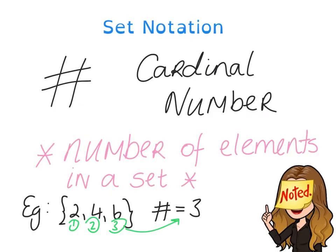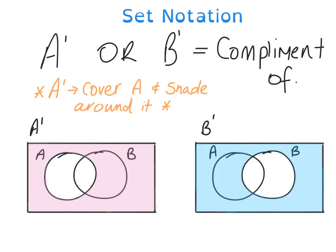Now you have this hashtag, which I told you before is not called a hashtag. In maths, it's called a cardinal number. It means the number of elements in a set. So if we had set 2, 4, 6, well, the number of elements or the cardinal number of that set is 3, because you've got 1, 2, 3 objects in the set.